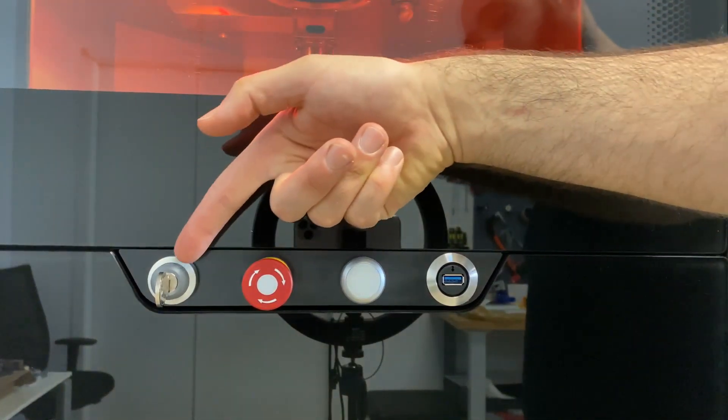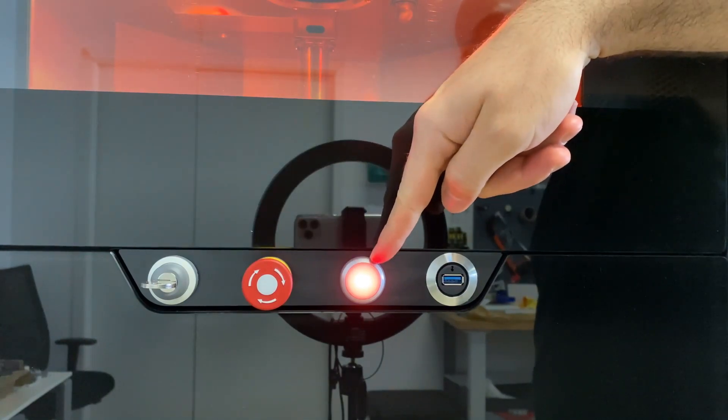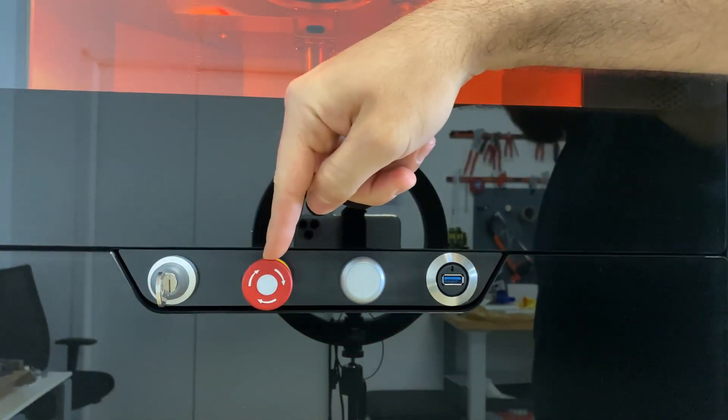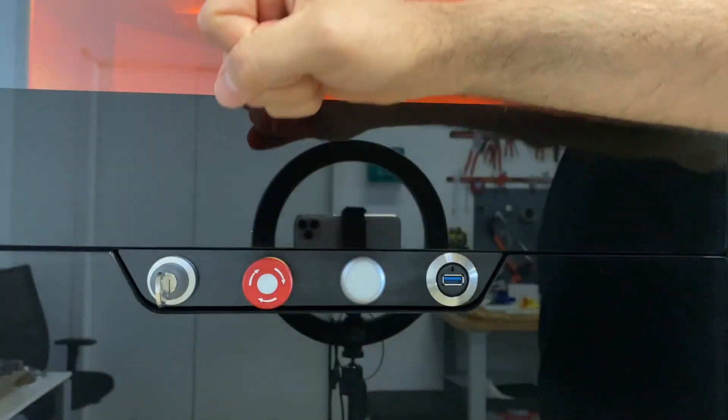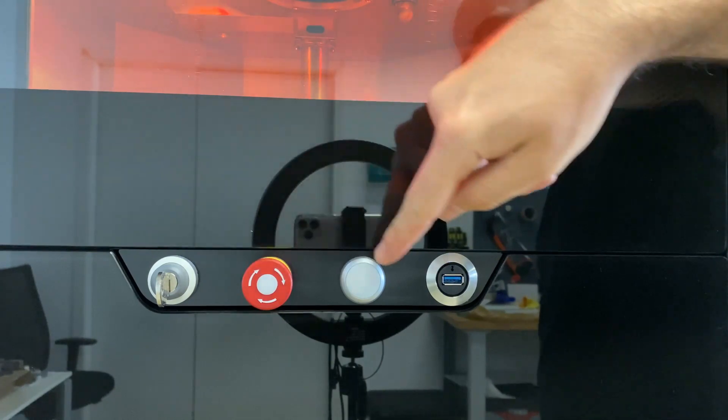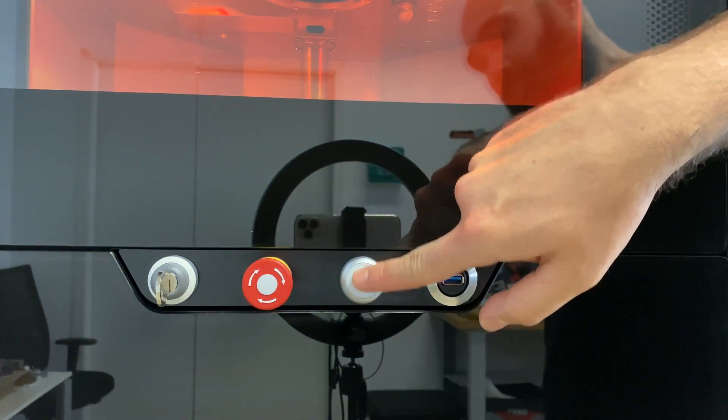On this front panel, you have the laser switch. When you turn it, you see this red indicator light that the laser is on. This is the emergency switch. You push it and the laser stops immediately. Pull it to reverse it. Here, you have the button to open the door. Just press it for one second and the door will open.